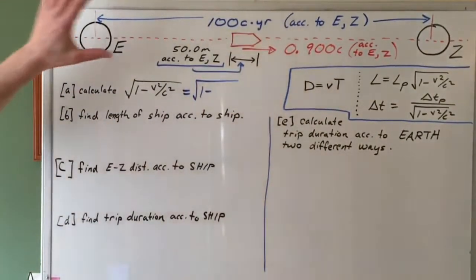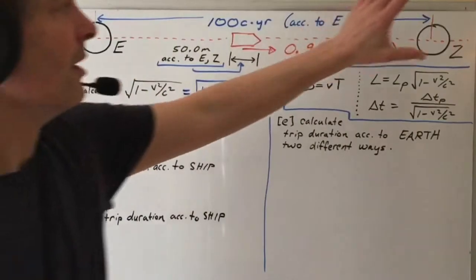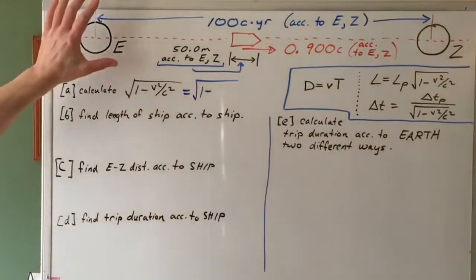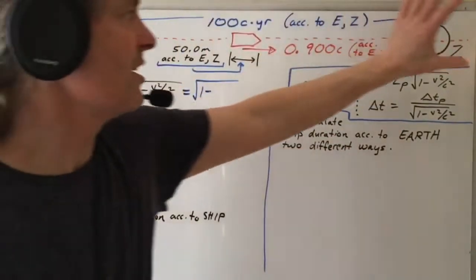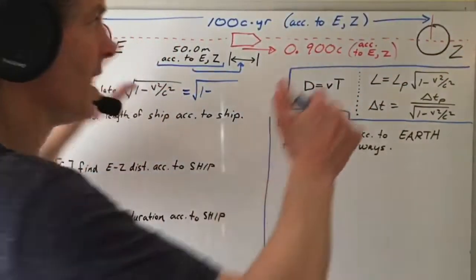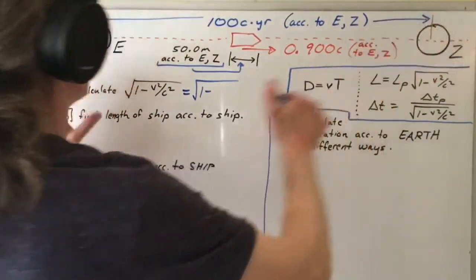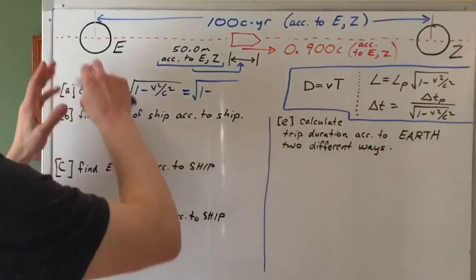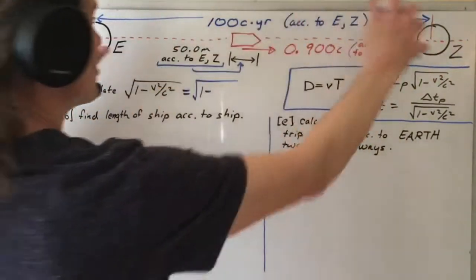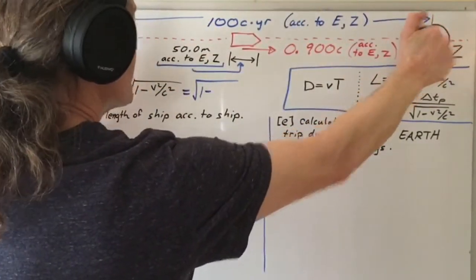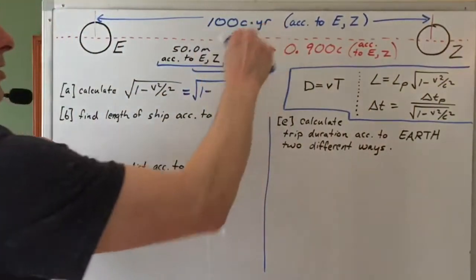So imagine we have Earth and planet Z, and imagine that Earth and planet Z are at rest with respect to each other, and that the separation between Earth and planet Z, according to both Earth and planet Z, is 100 light years.